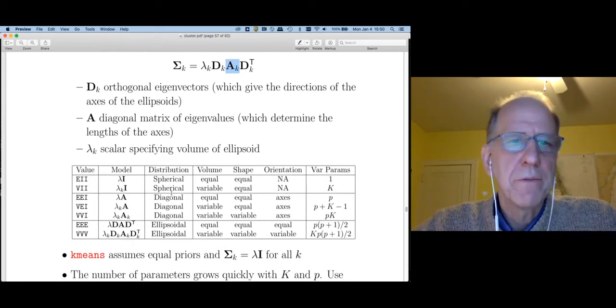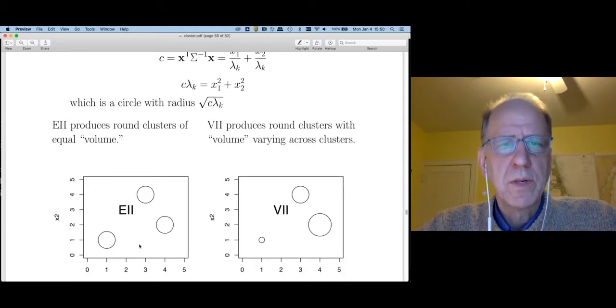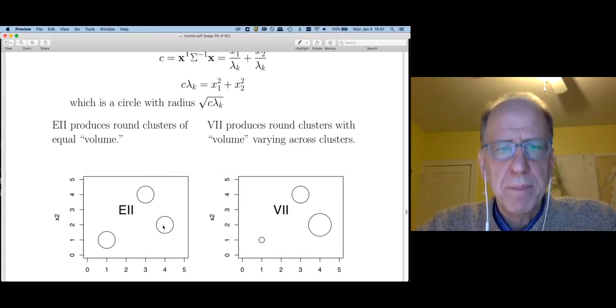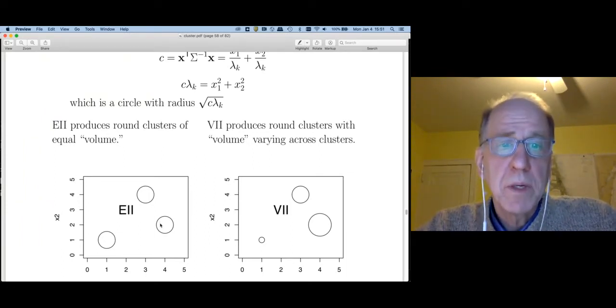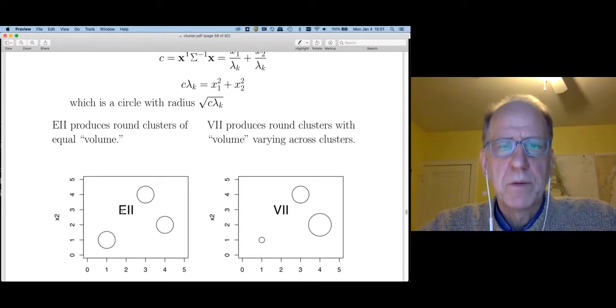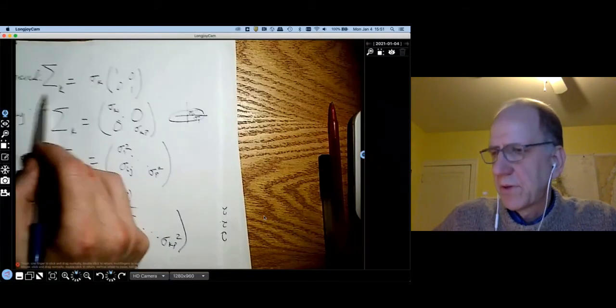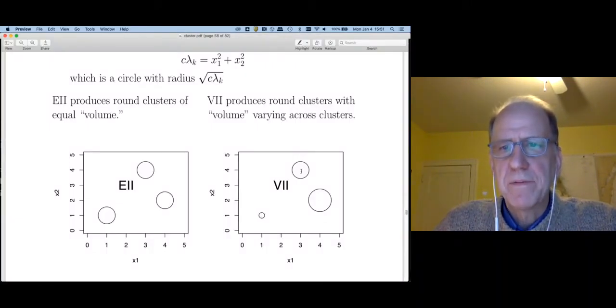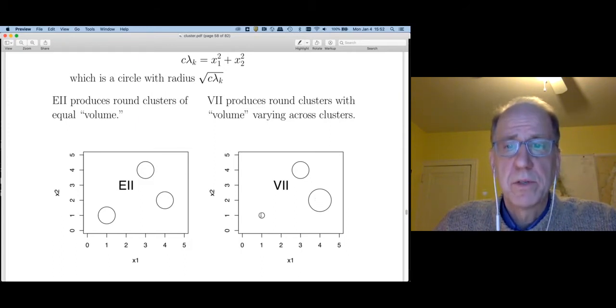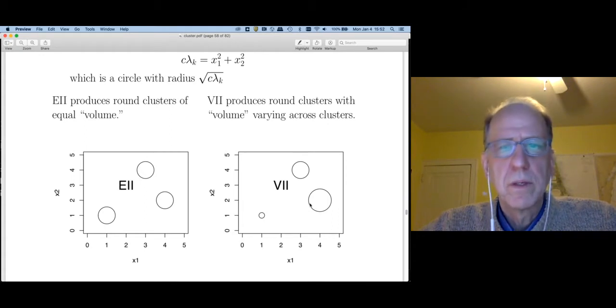In total, there's something like 16 of these models that R will fit for you. I think it's useful to just talk about a handful. Let's start with the first two. EII and VII both specify spherical distributions. So EII says all the clusters have to be spherical and they share a variance parameter. This is not something offered by Python. This is implicitly what's assumed by k-means. The only difference between EII and k-means is that the Gaussian mixture model with the EII allows for unequal priors, whereas k-means is going to be biased towards having equal cluster sizes.